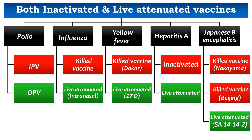The Japanese B Encephalitis live attenuated vaccine targets populations in four states in India: Uttar Pradesh, Karnataka, West Bengal, and Assam.